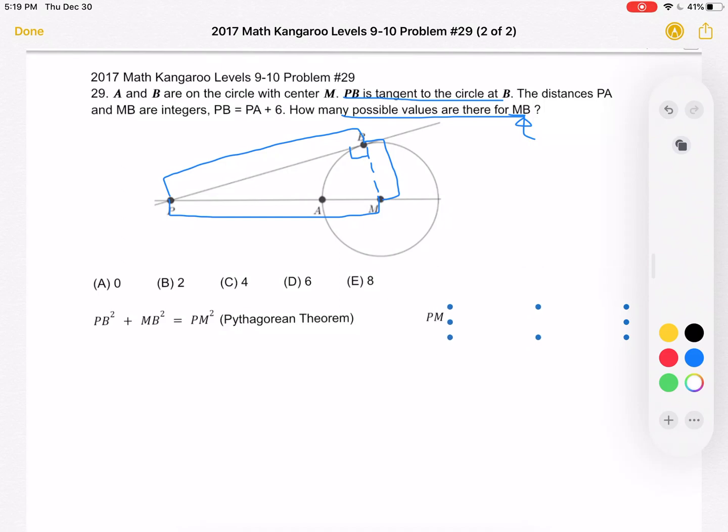So we have PM which can be written as the sum of PA plus AM. However, as you can see in the drawing, AM is equal to the radius of the circle centered at M.